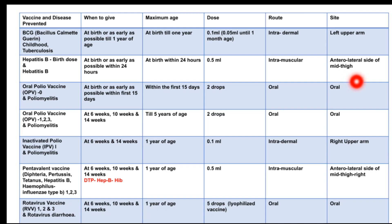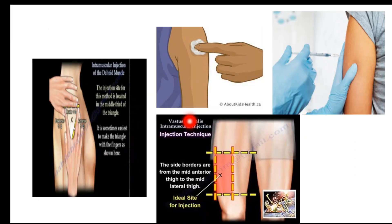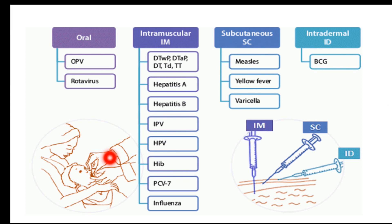These are the various routes of injection. Intradermal involves the layers: epidermis, dermis, subcutaneous, and muscle. At a 90-degree angle it is intramuscular; at 45 degrees it is subcutaneous; and at 10 to 15 degrees it is intradermal into the dermis. Various sites include the left and right upper arm at the deltoid muscle, and the anterolateral side of the mid thigh. OPV is given orally in the form of drops.